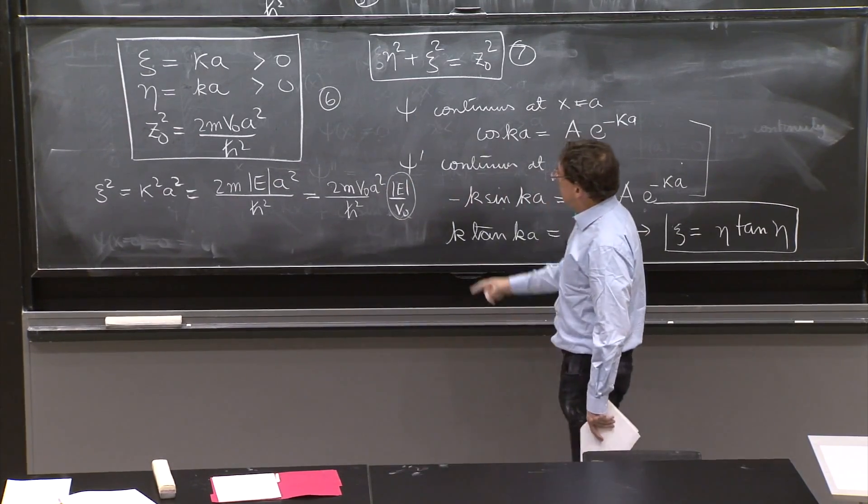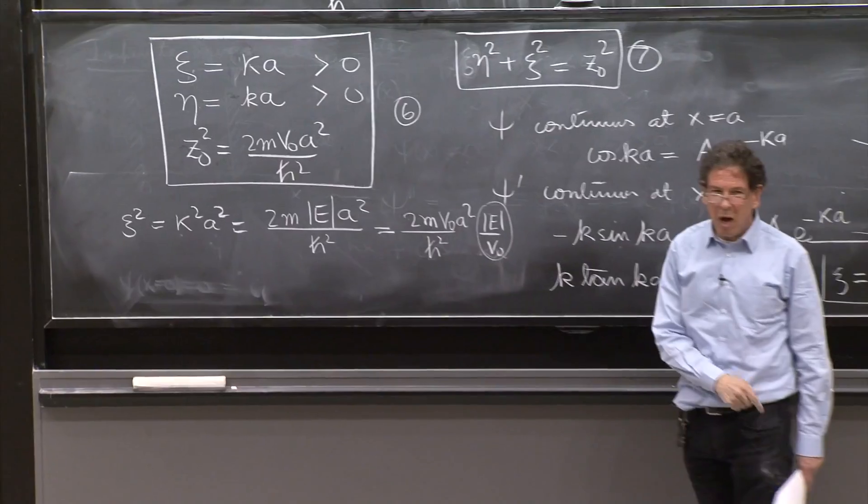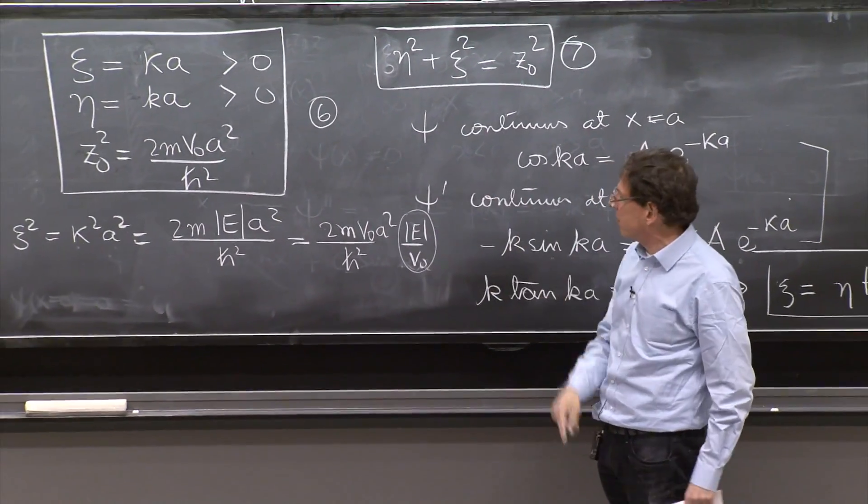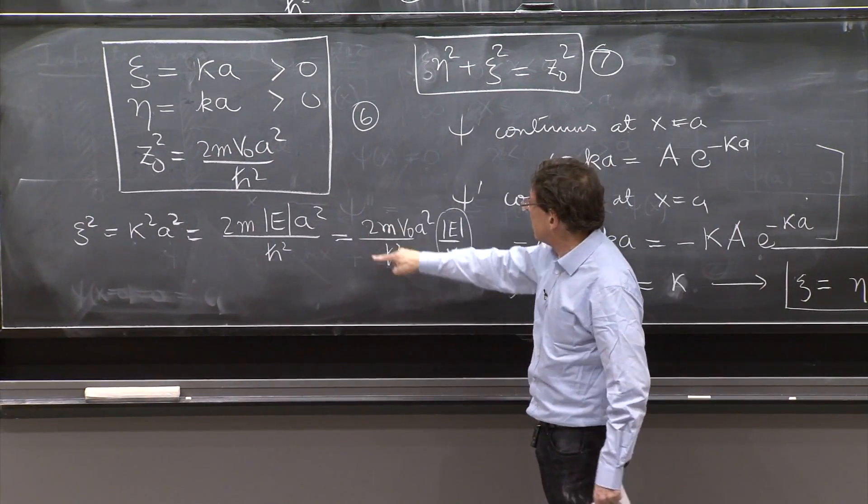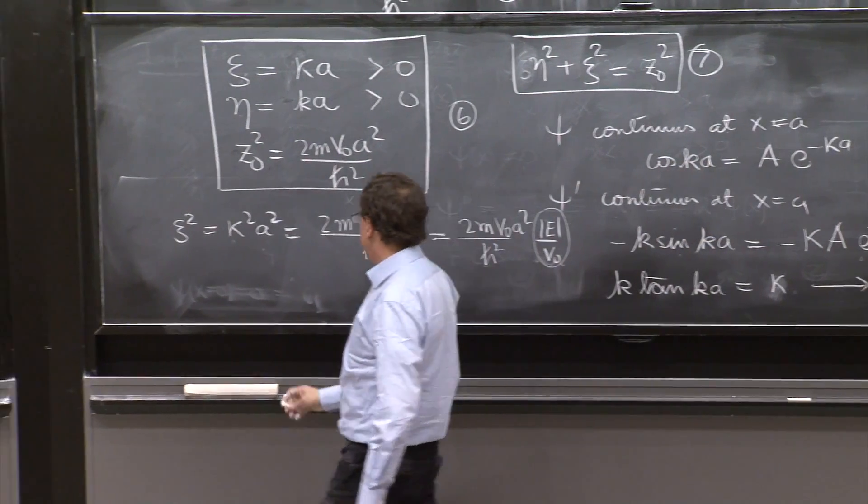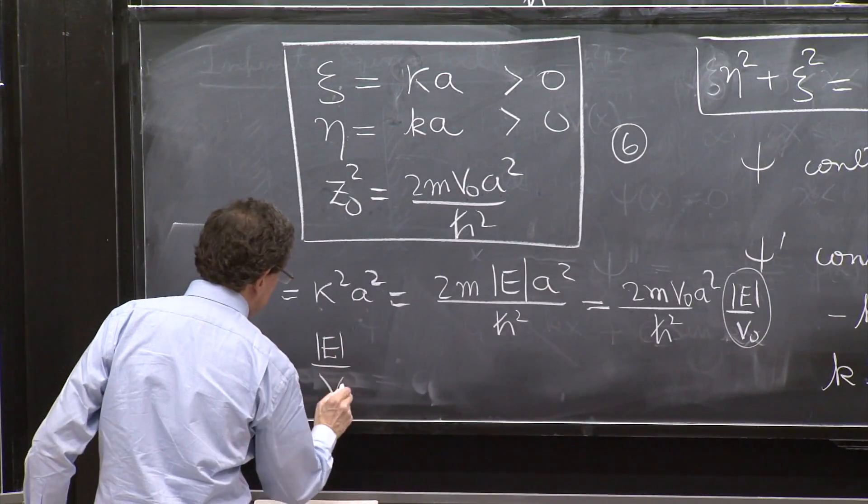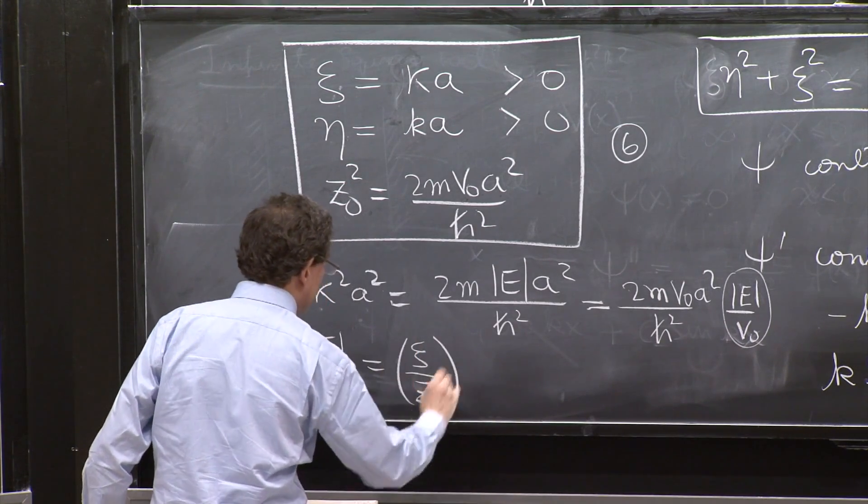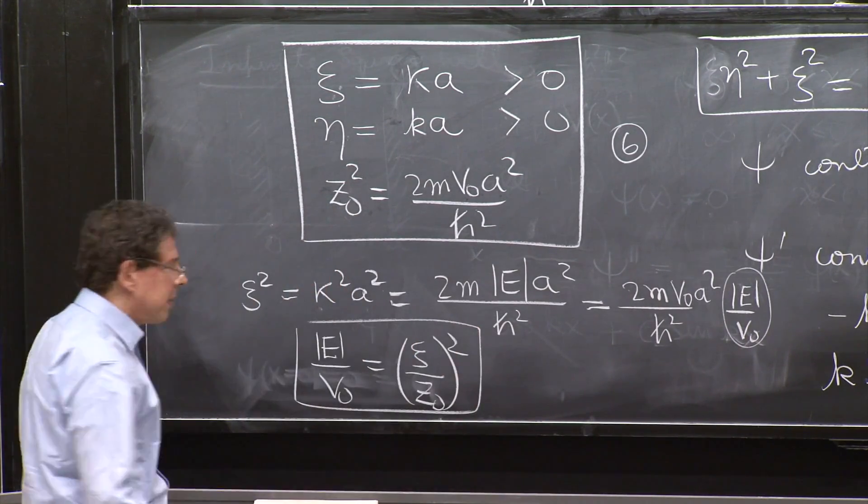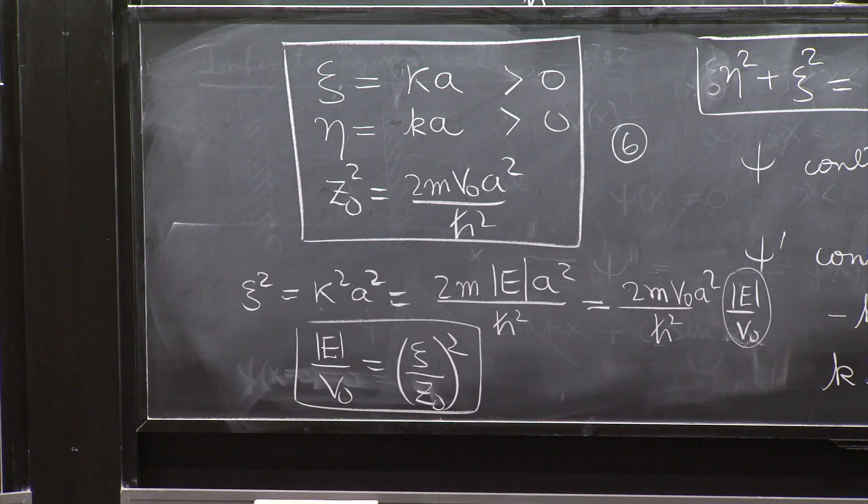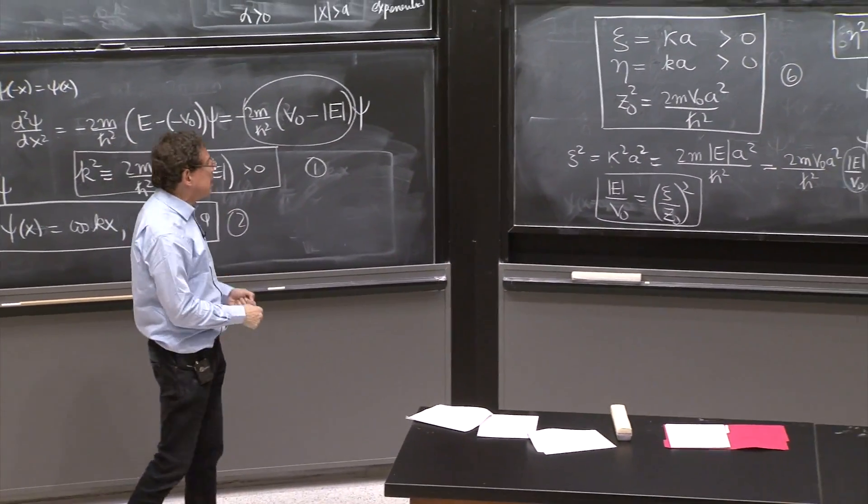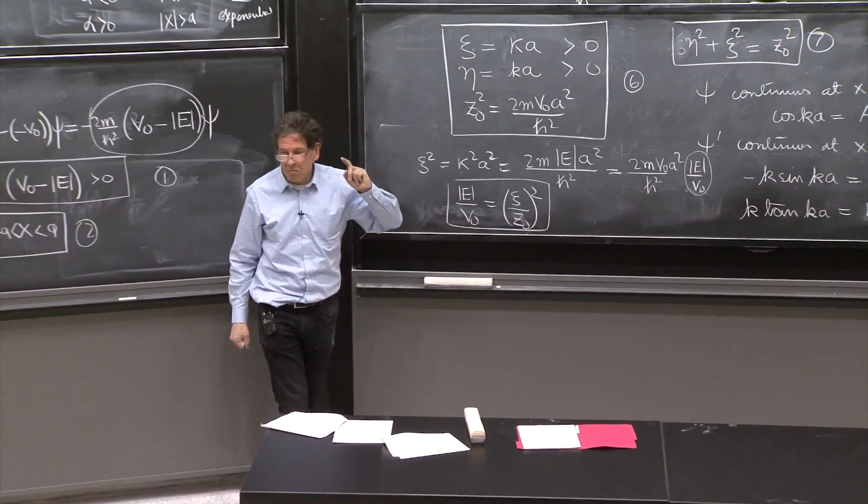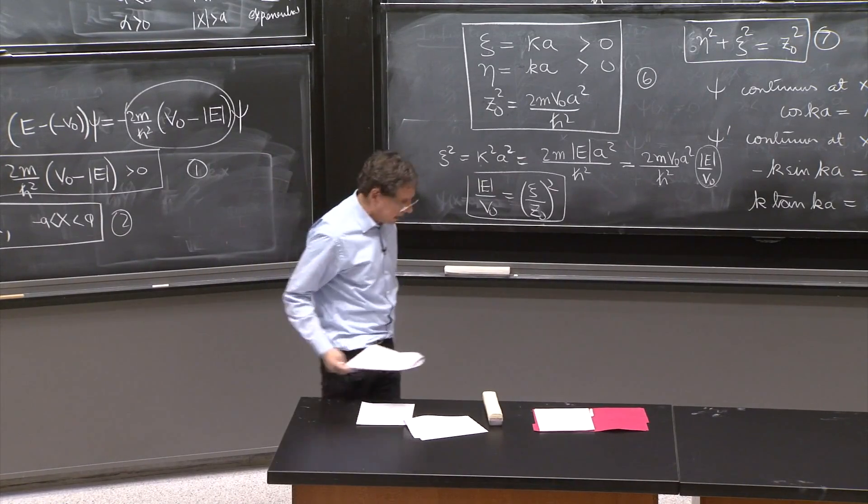2m v0 a squared over h squared, absolute value of e over v0. After all, you probably prefer to know e over v0, which tells you how proportional the energy is to the depth of the potential. And this is your famous constant, z0. So e over v0 is actually equal to psi over z0 squared. And this is something just to keep in mind. If you know psi, you certainly must know z0, because that's knowing your potential. And then you know how much is the energy. And again, all very convenient things.